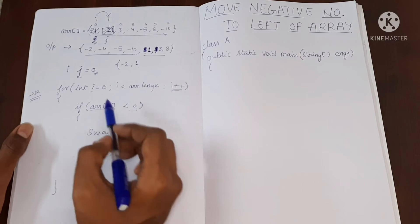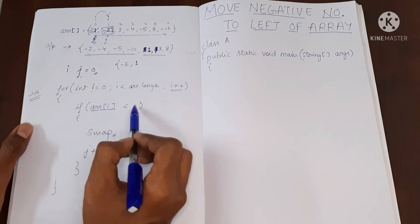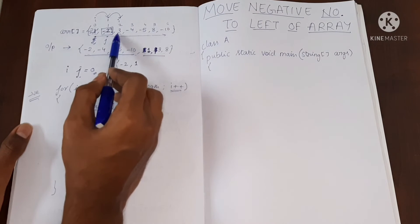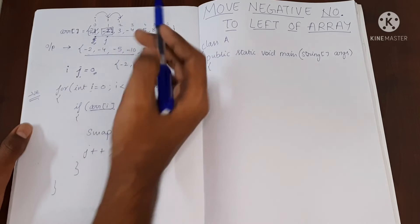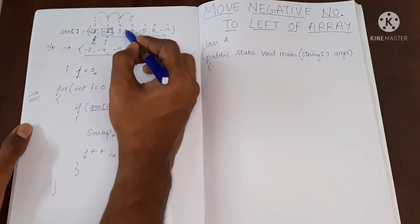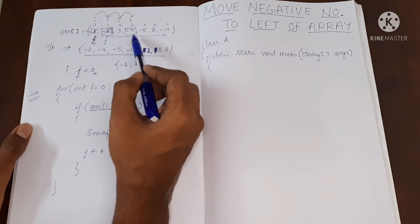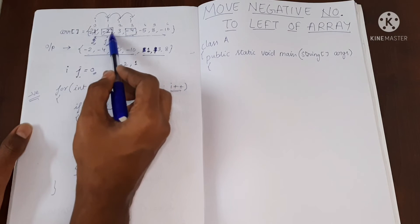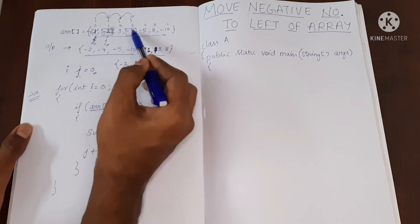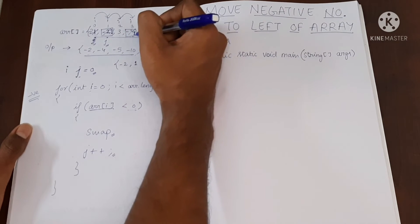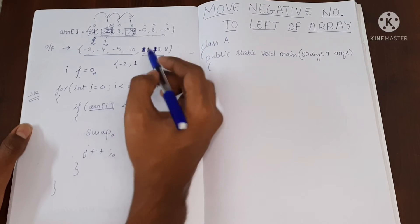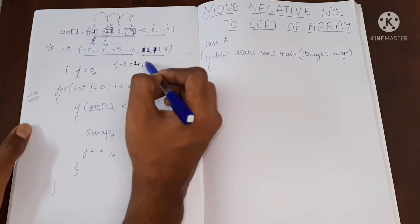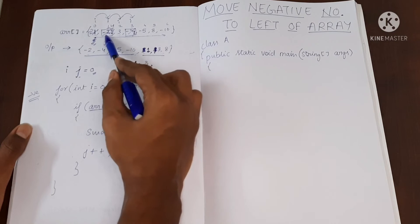J plus plus will move J to the next location. The loop runs again — we check if arr[i] is less than zero. I has incremented; this value is not negative, so we move to the next location. Now we've found minus four, which is a negative value. I'm going to swap the value at the ith index with the value at the Jth index. J is pointing to 1, so we swap 1 with minus four.